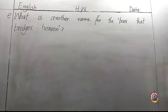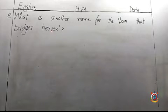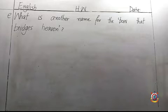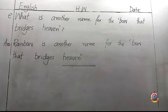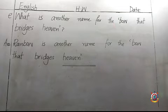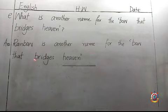The next question is: what is another name for the bow that bridges heaven? The answer is rainbow. Rainbow is another name for the bow that bridges heaven.